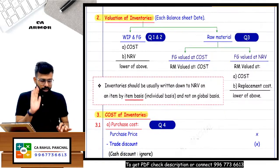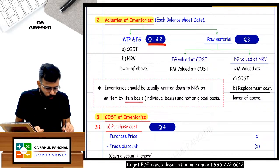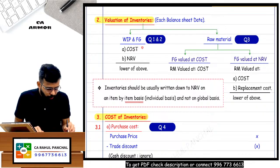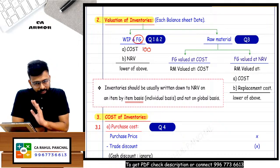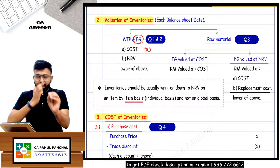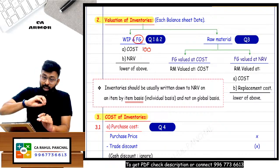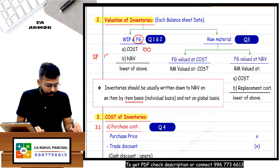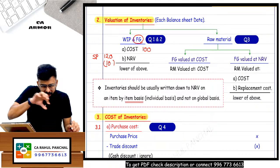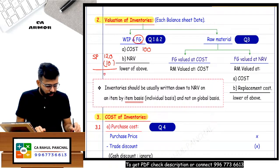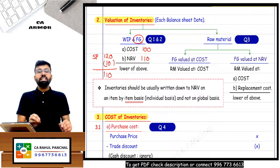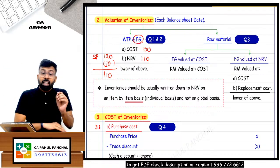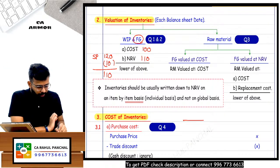For WIP and finished goods there are two questions, and for raw material valuation there is question number three. If my cost to manufacture one finished good is 100, and net realizable value after paying salesman commission and distribution cost is 110 — so I will realize 110 from selling. Can I book that gain now? No. You cannot record inventory at the selling price.